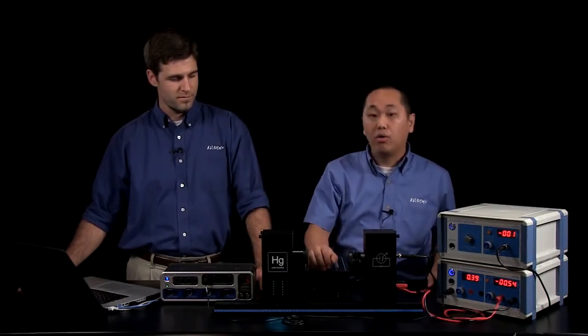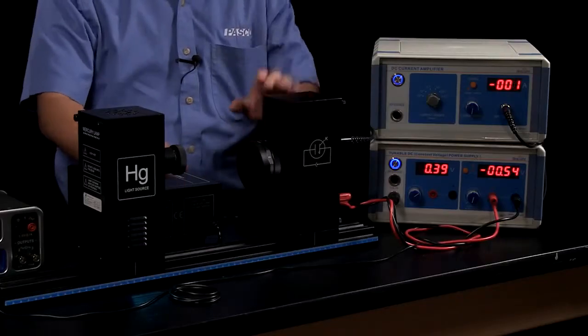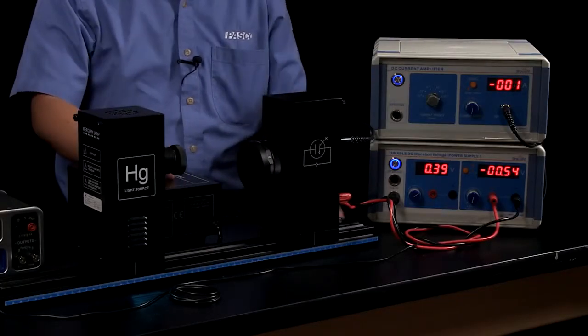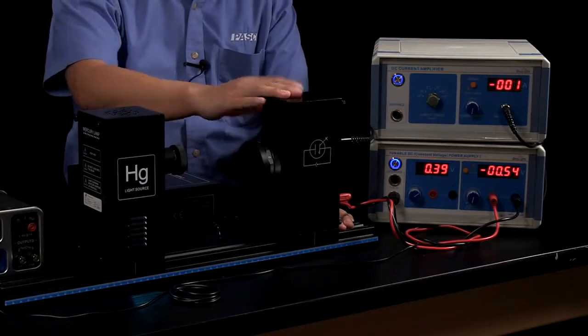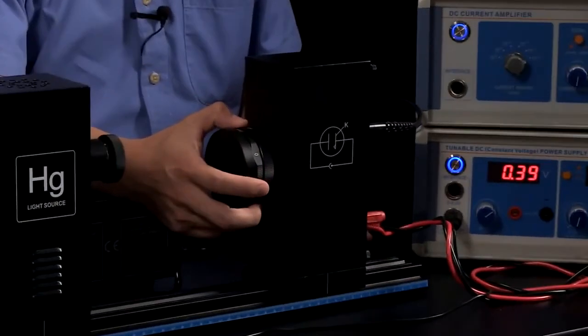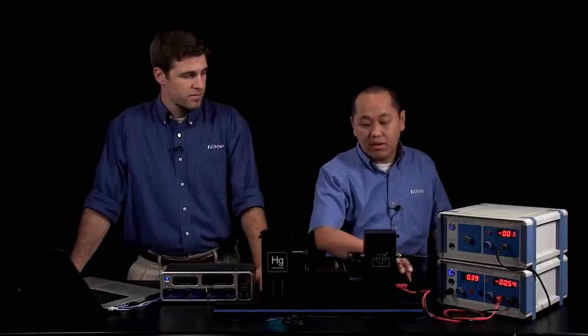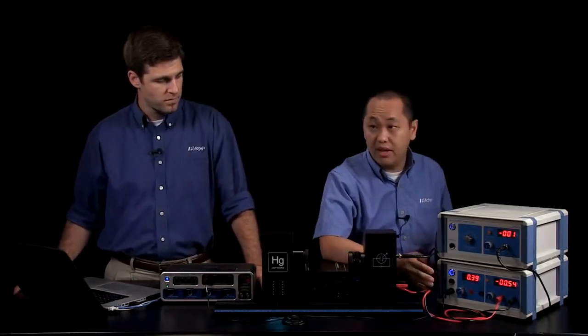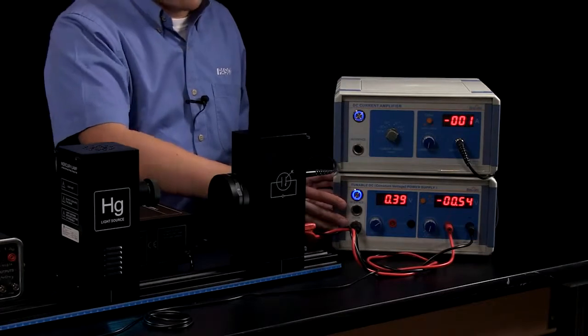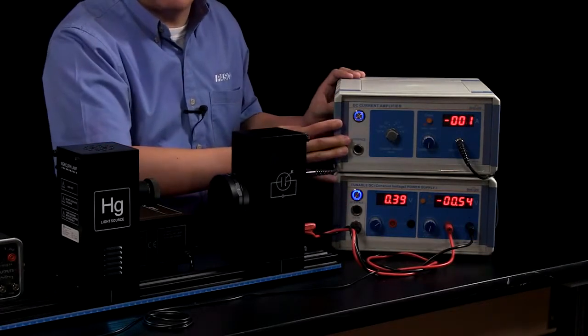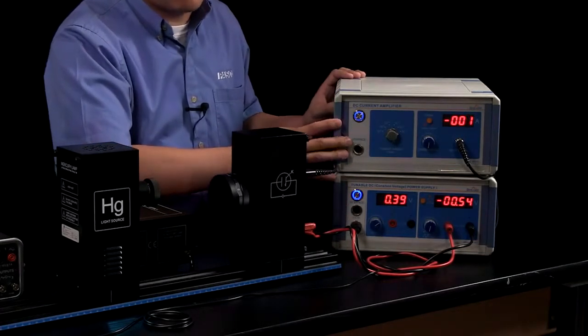Connected on the bottom we have a guide rail that holds together the photodiode and the mercury lamp. On the photodiode itself we have an aperture adjustment and a color filter adjustment and a cover. So connected onto the bottom of the photodiode we have the voltage power supply and then connected on top we have the DC amplifier itself.